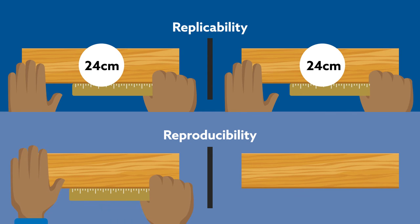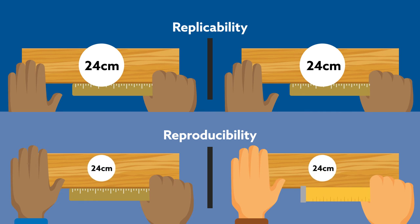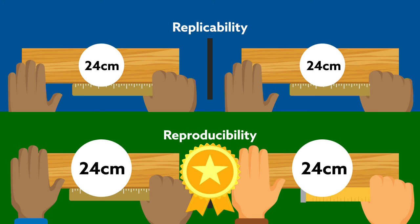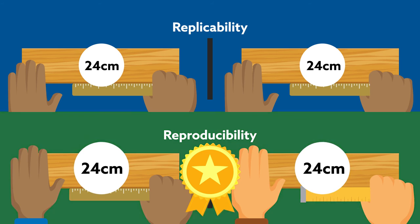Reproducibility, however, goes a step further and varies at least one component, such as the test subjects, measurement tools, and who is doing the work. Understanding the difference is important because a reproduced finding is generally considered more reliable than one that is just replicated.